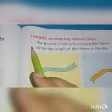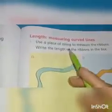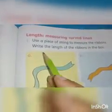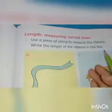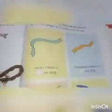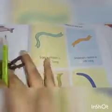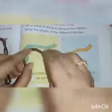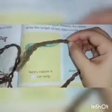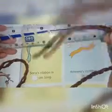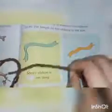Here we have question number one: use a piece of string to measure the three ribbons and write the length of the ribbons in the box. We are going to measure these curved ribbons with the help of string. When we complete our measuring, we will cut the string with scissors, then measure that part of the string with the scale. We will start with point A — here we have a curved ribbon.